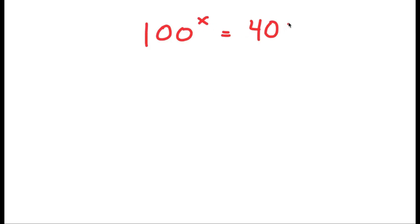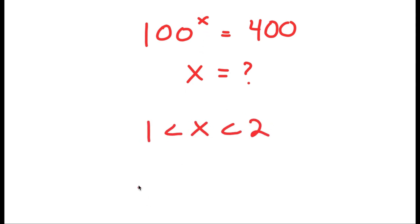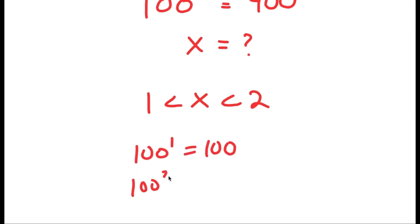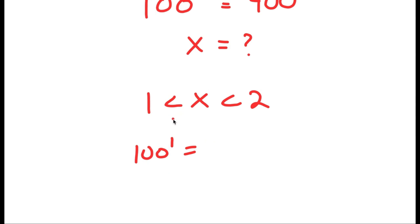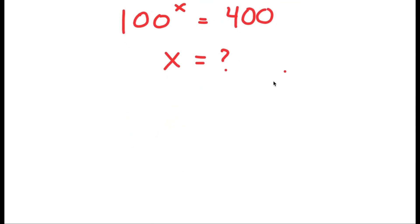Alright, so in this next problem I'm going to solve an interesting exponential equation. My equation is 100 to the power of x is equal to 400, and I want to find the value of x. We can see that x is going to be between 1 and 2, because 100 to the power of 1 is 100 and 100 to the power of 2 is 10,000. It's going to be closer to 1 than to 2. To solve this, I'm going to use logarithms.